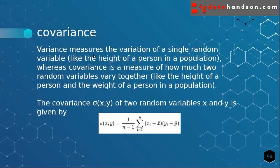Variance is the measure of the variation of a single random variable. Variance calculates the spread of the data of only one variable. But in covariance, two variables are involved. Covariance is a measure of how much two random variables vary together. To calculate covariance, the formula is: (1/(n-1)) × Σ(Xi − X̄)(Yi − Ȳ), where we consider two variables x and y.